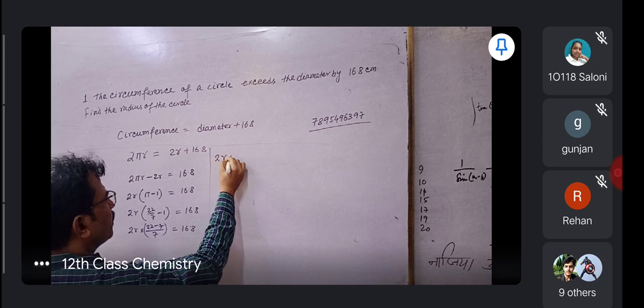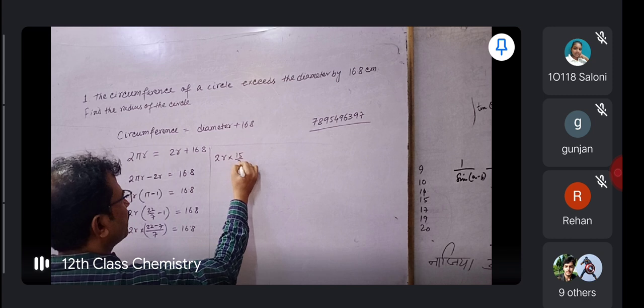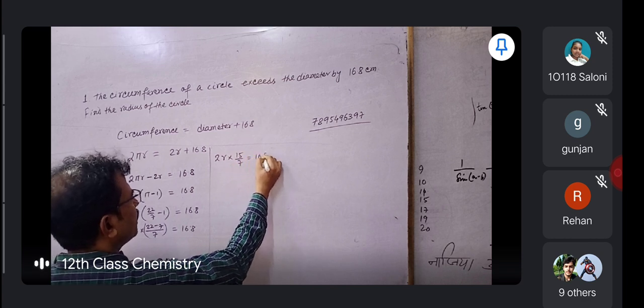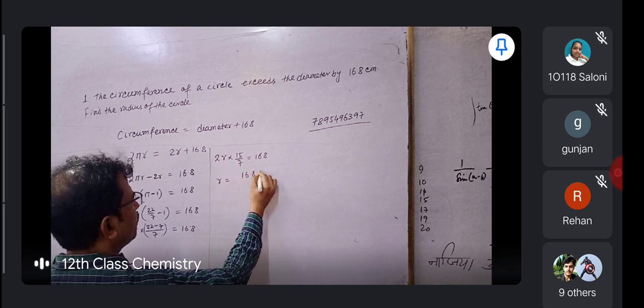2 r into 15 by 7, 16.8. So r equals to 16.8.